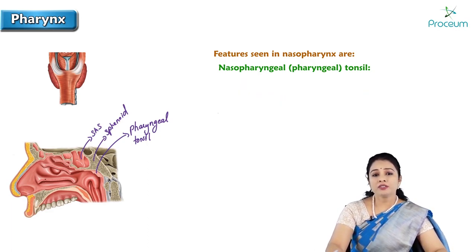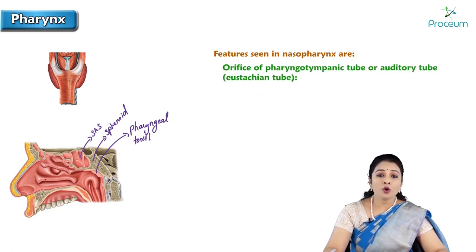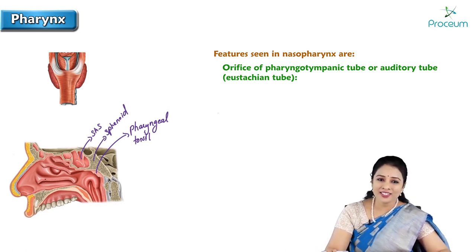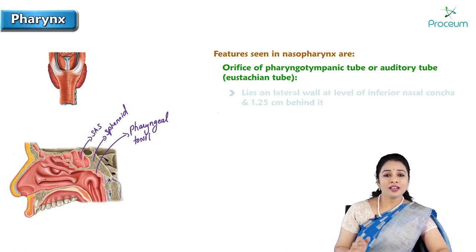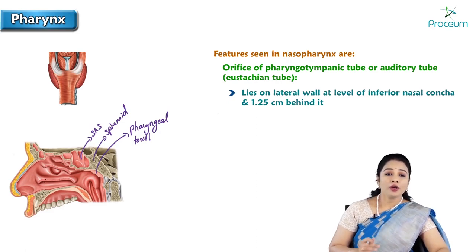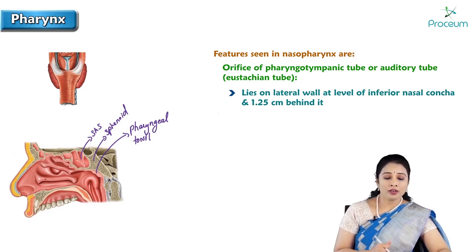It represents the remains of Rathke's pouch, and a craniopharyngioma may arise from this Rathke's pouch. The next important feature is the orifice of the pharyngotympanic tube, or auditory tube, otherwise called the Eustachian tube. This lies on the lateral wall at the level of the inferior nasal concha.